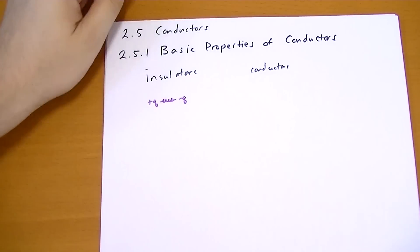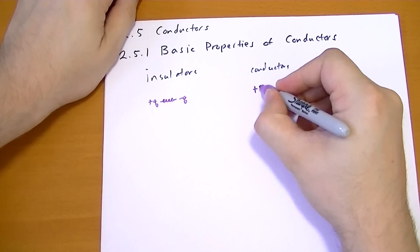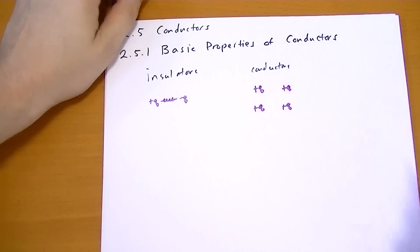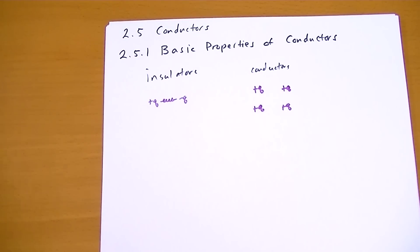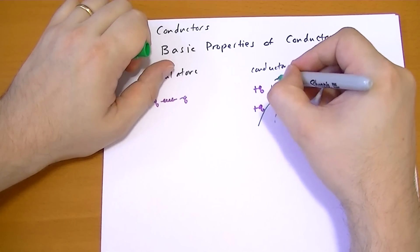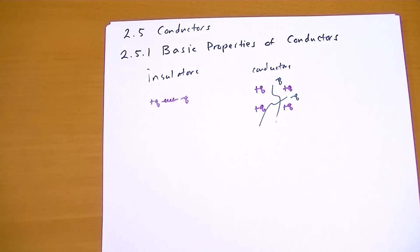Whereas conductors are more like this. You have a network of positive charges, and then the negative charges, they can just do whatever they want. So they just wander, and they can hang out next to a positive charge, but they can move around freely. They're not bound to the positive charges.